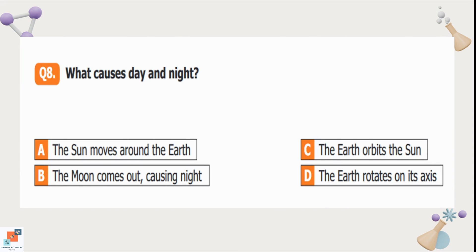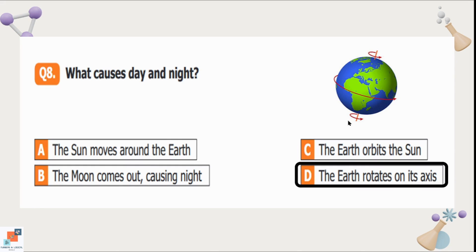Question number 8: What causes day and night? Option A is the sun moves around the earth. It doesn't happen. Option B is the moon comes out causing night. C is the earth orbits the sun. Earth orbits the sun which causes years. Option D is the earth rotates on its axis. When earth rotates on its axis that causes day and night. So option D is the correct option.